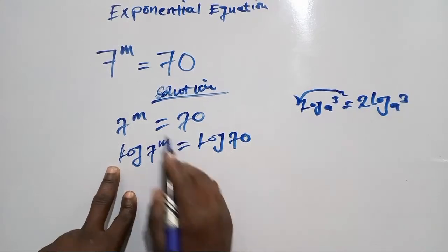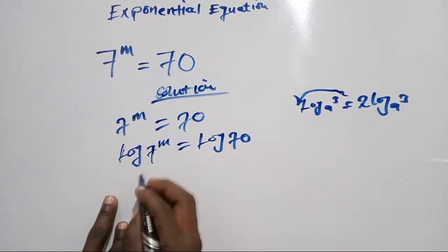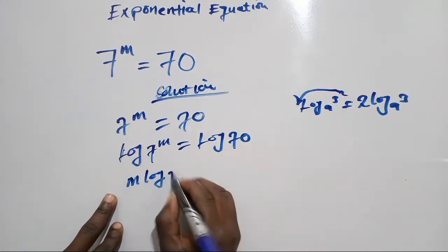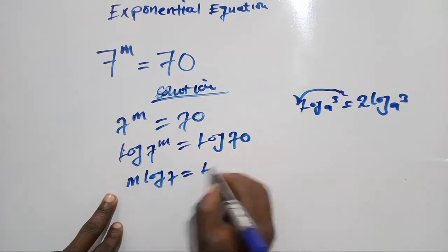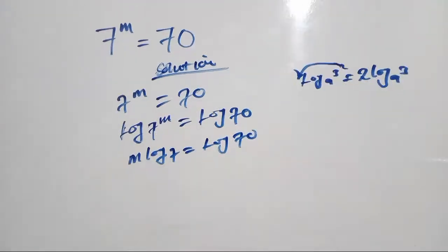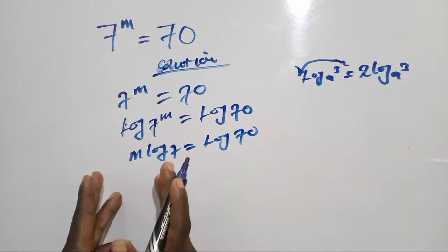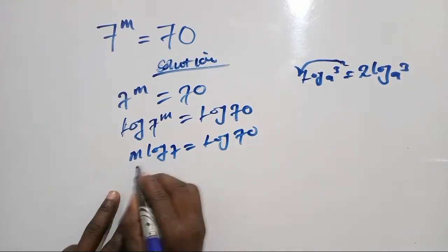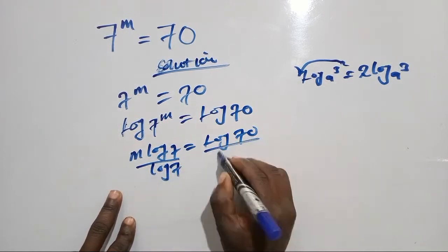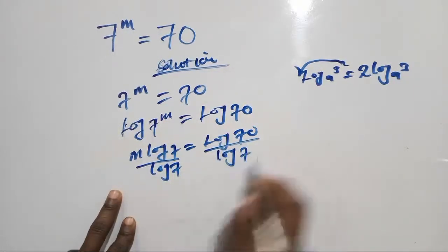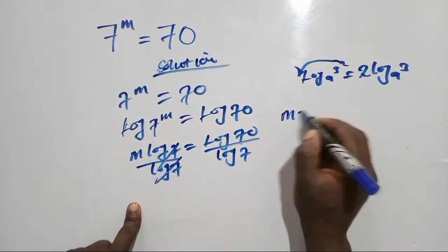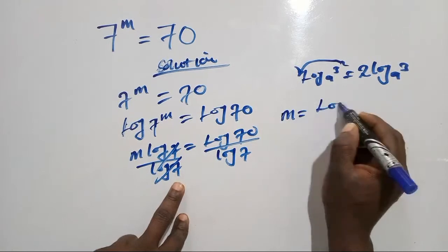So m will be m log 7 equals log 70. Then, because we are looking for m, we have to divide by log 7 on both sides, in which we have m equals log 70 over log 7.